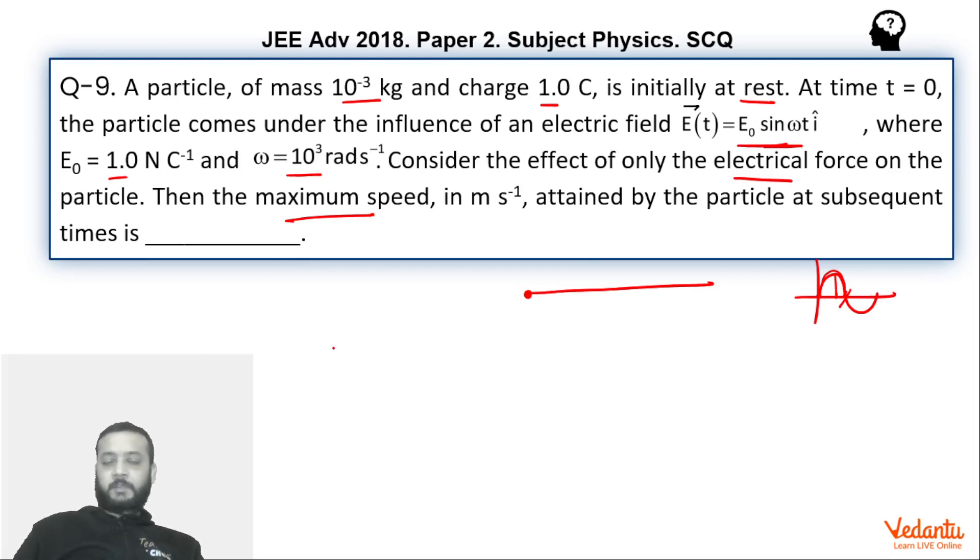Now this question is easy. So we can say that M into dV by dt, so this is the force, will be equals to qE0. Now dV equals to qE0 - this is qE. So dV will be equals to qE. Let's put the value of e: qE0 sin omega t. This is qE by m dt. And hence we can integrate.